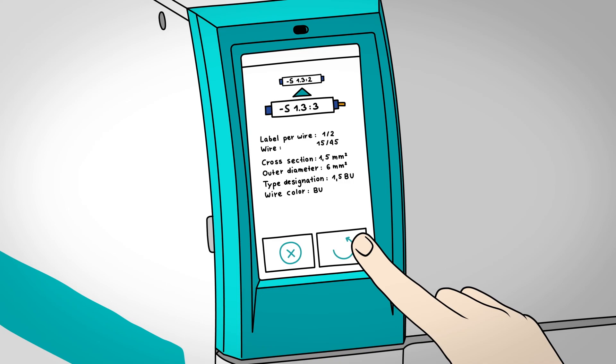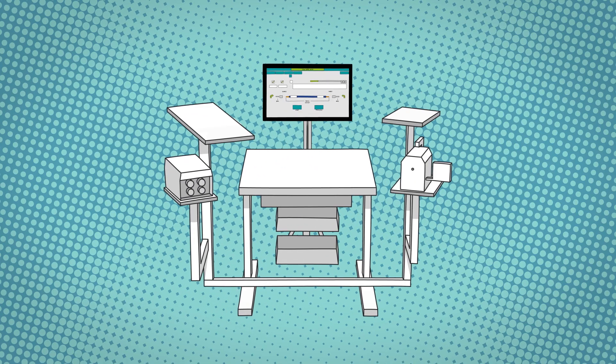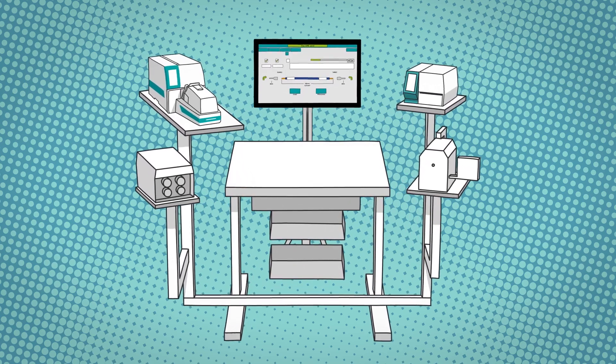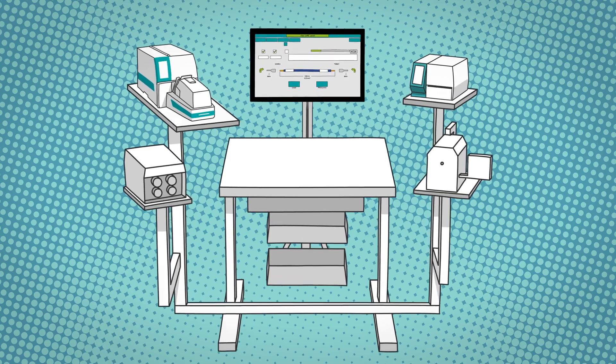The system works directly at the control cabinet. In combination with the Thermomark E-Series devices, the ergonomically designed worker assistance system enables efficient and digitally supported wire processing.